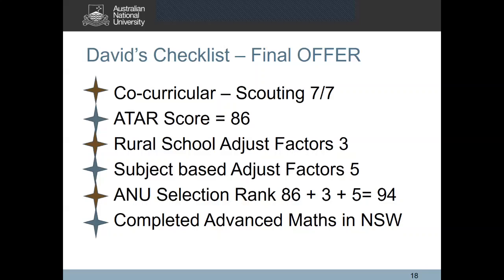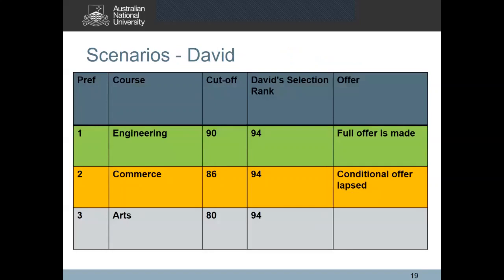Additionally, David also completed advanced maths in NSW, so he would meet the prerequisite requirements for his engineering program. Assuming he did not change the order of his preferences and he accepted his conditional offer, we will start assessing his application again at the final offer stage, starting with the topmost preference. With a selection rank of 94, David not only meets the cutoff for engineering but is deemed competitive as well. Since he met the maths prerequisite, we will make a full offer to David for his Bachelor of Engineering. We will not continue to assess his second and third preferences as he has already received an offer to his highest preference.